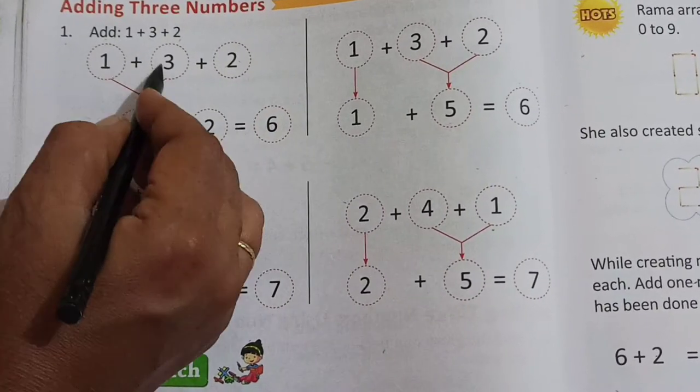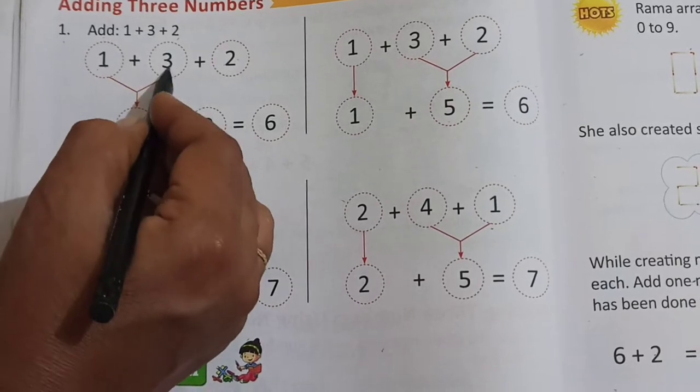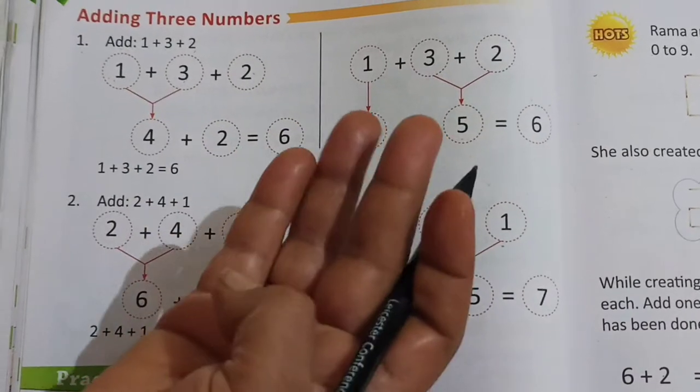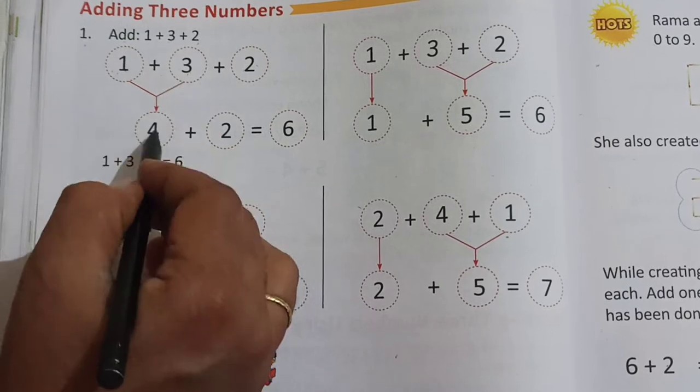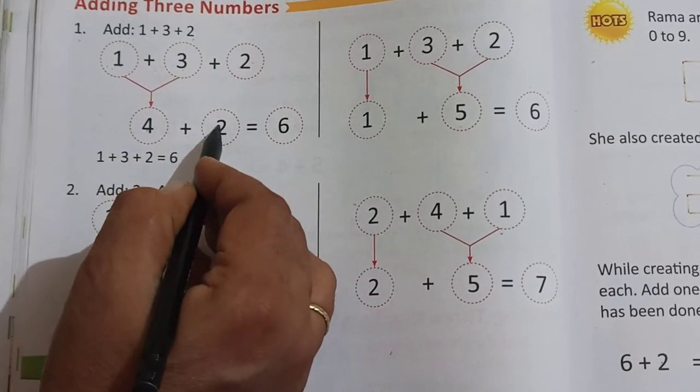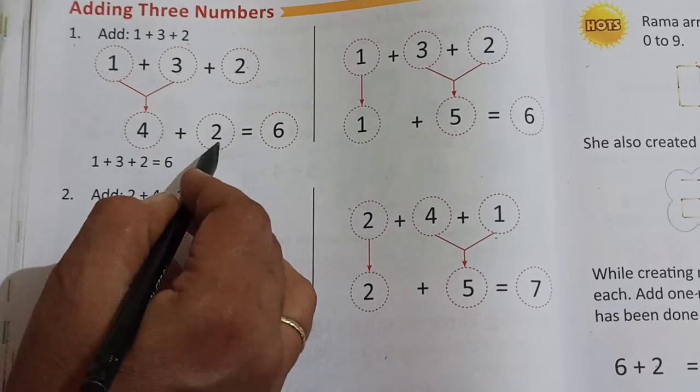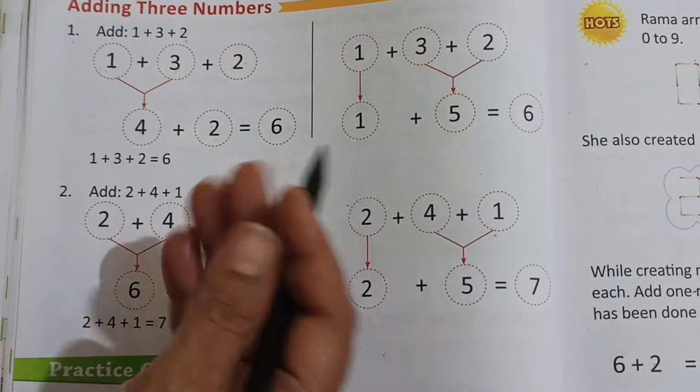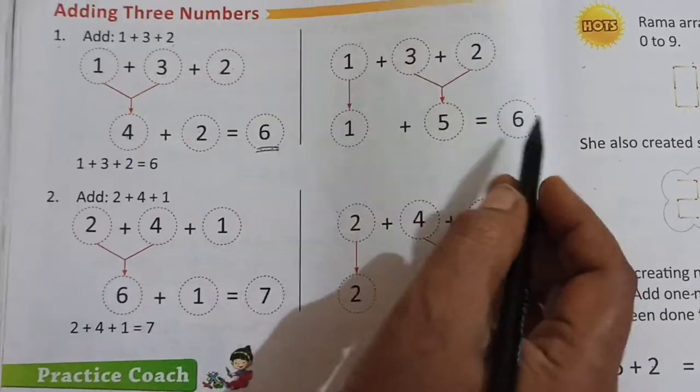First we have to add these two numbers. 1 plus 3. After 1, 2, 3, 4. And then again we have to take these two numbers. Then 4 plus 2. After 4, 5 and 6. And this is the answer.